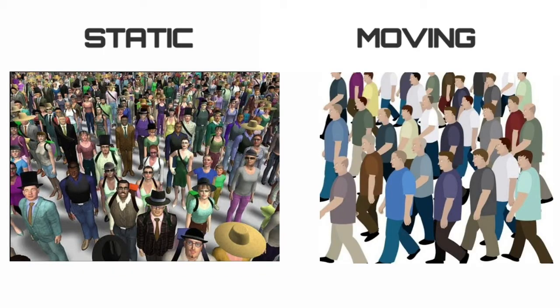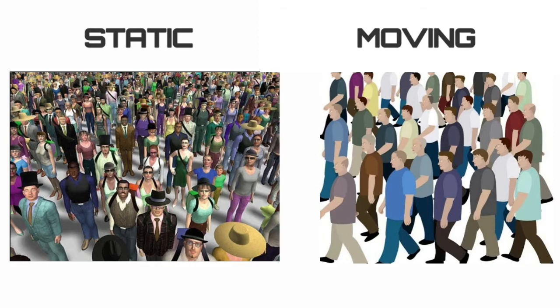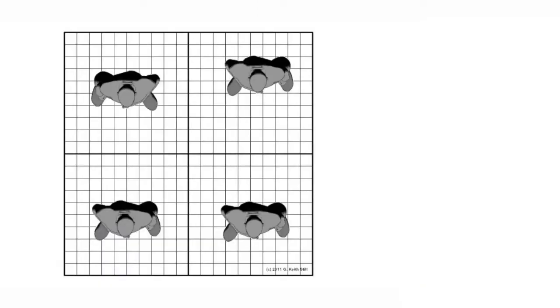Static crowd density is the number of people per m² who are constant and not moving, whereas in moving crowd density, they are moving. Firstly, we shall start with static.